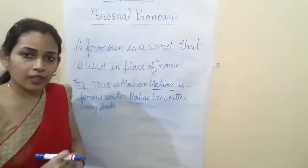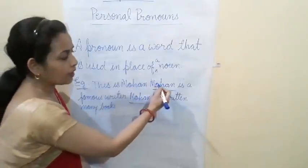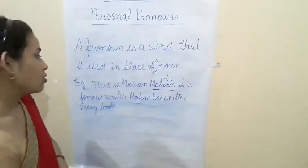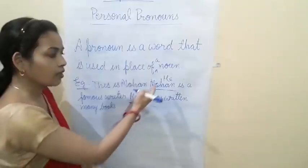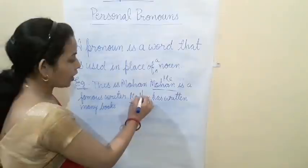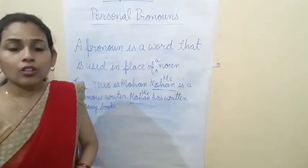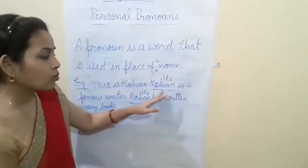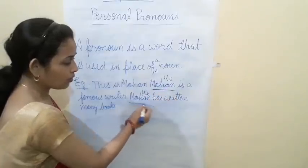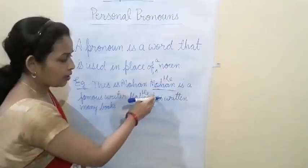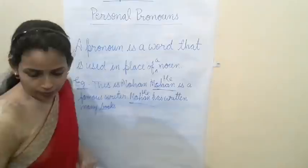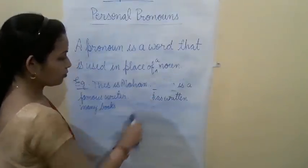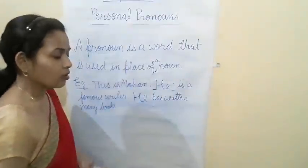First we establish the noun: 'This is Mohan.' Then in place of Mohan, according to gender — if it is male, we use 'he'; if female, 'she'. So: 'This is Mohan. He is a famous writer. He has written many books.' To avoid the repetition of the noun Mohan, we use the pronoun 'he'. That is called the pronoun — a word used in place of a noun.